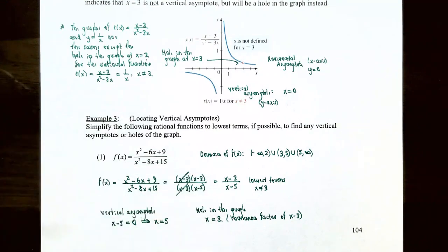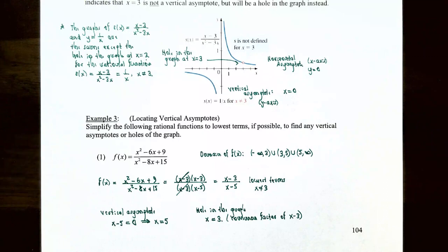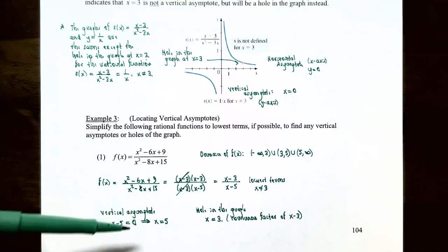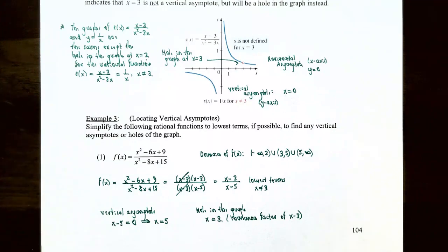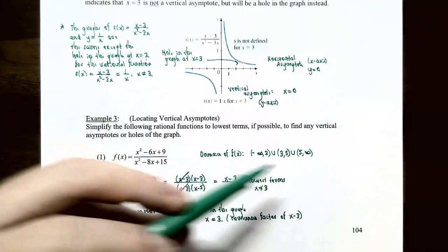Since the function is now in lowest terms, we can identify vertical asymptotes. Whatever makes the denominator zero gives a vertical asymptote: substituting x equals 5 gives zero, so the vertical asymptote is x equals 5. There is a hole in the graph at x equals 3. The domain of f(x) is all real numbers except x equals 3 and x equals 5, or in interval notation: negative infinity to 3, union 3 to 5, union 5 to infinity, each with parentheses.